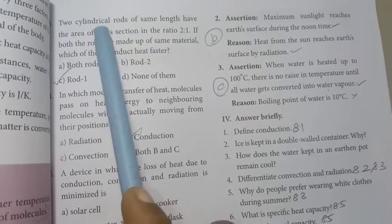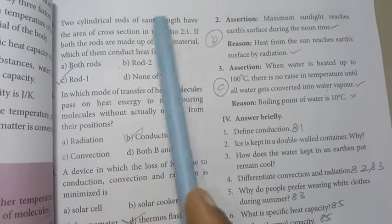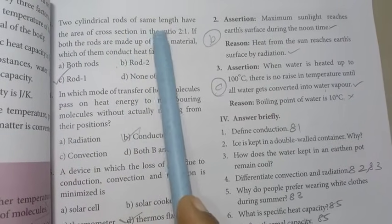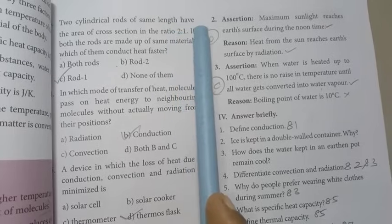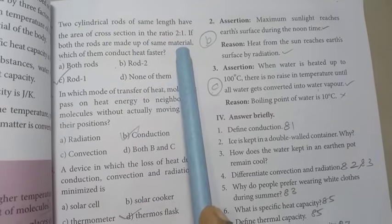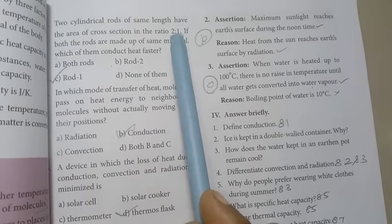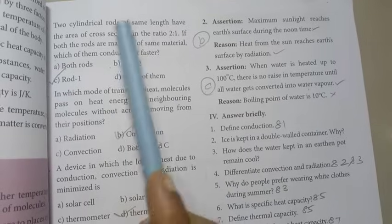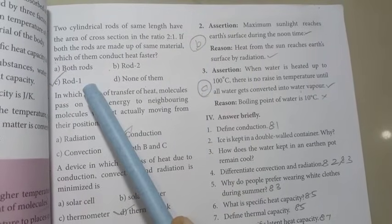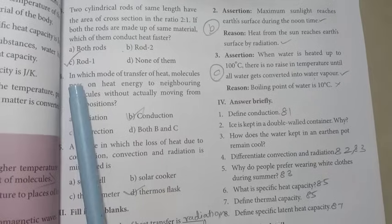Then third one: Two cylindrical rods of same length have the area of cross section in the ratio 2 is to 1. If both the rods are made up of same material, which of them conduct heat faster? This is the ratio. If the rod is 2, it is ratio 2. So, rod 1, C option is the right answer.